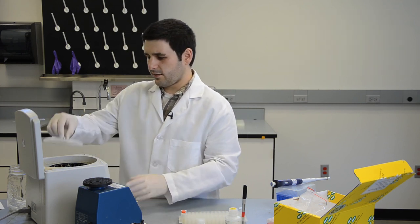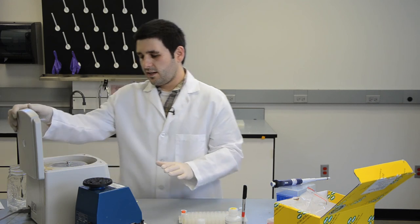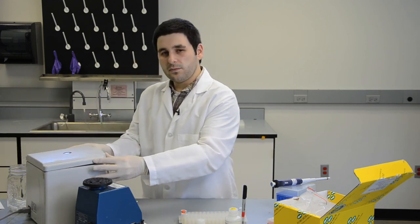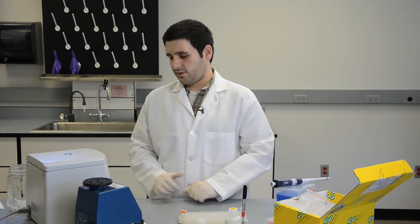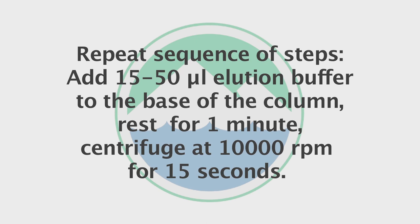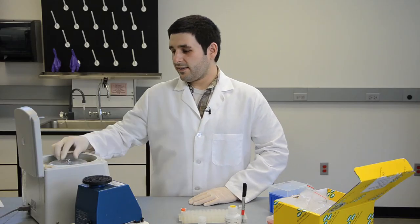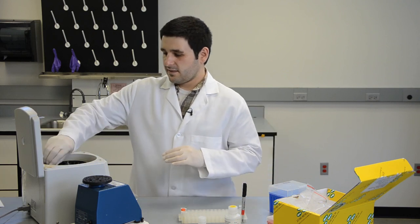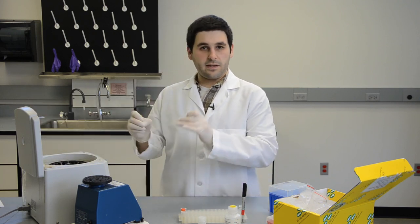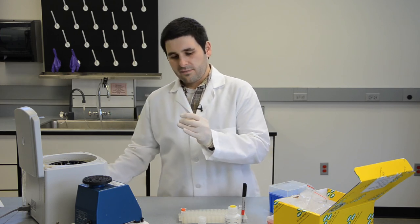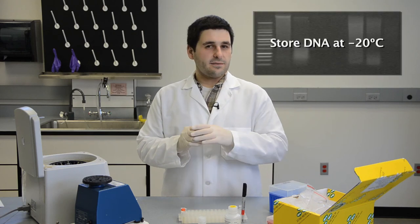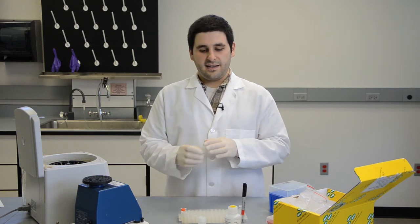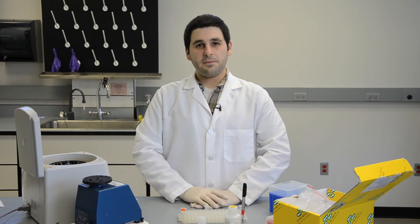The reason I do 10,000 RPMs is so I can't close the cap of the Eppendorf tube all the way, which ensures the cap doesn't break off. Now that it's finished centrifuging, we can discard this filter now that we have all our DNA off of it. We want to store this purified DNA at negative 20 degrees Celsius for further use. That concludes our second step in DNA extraction.